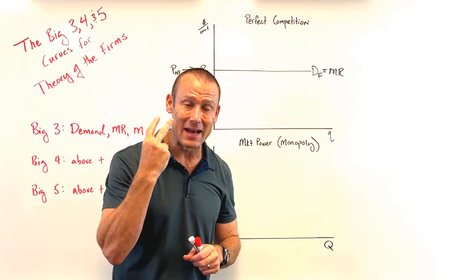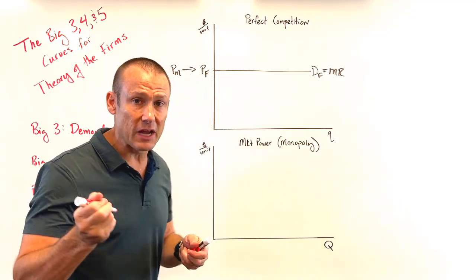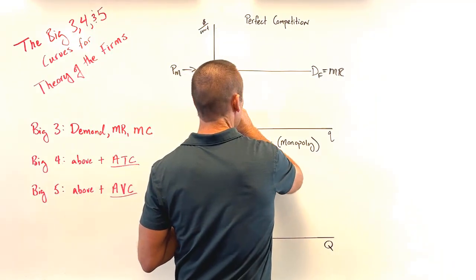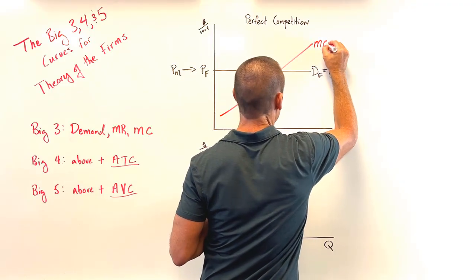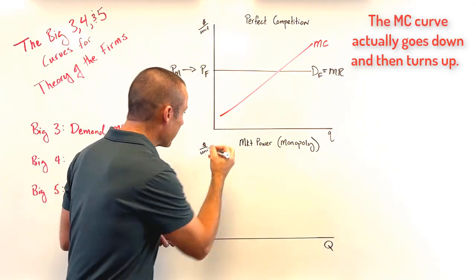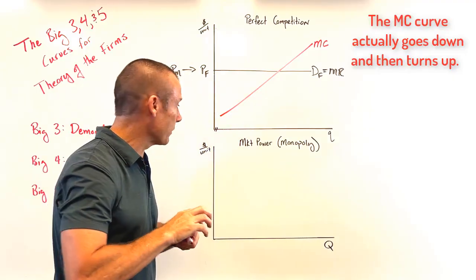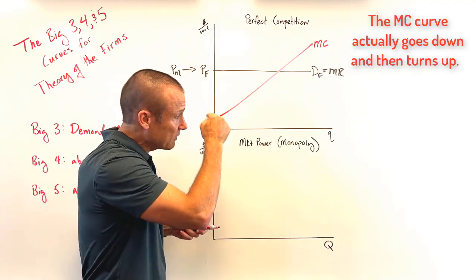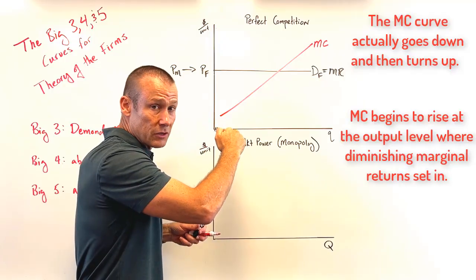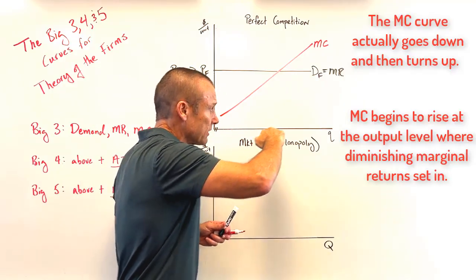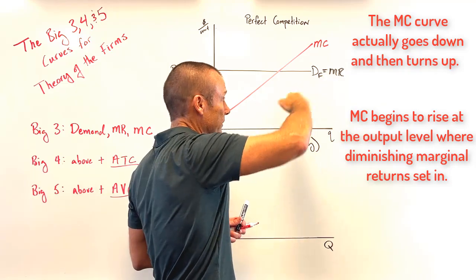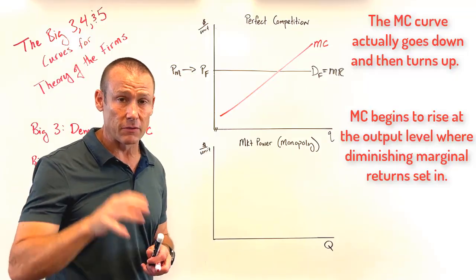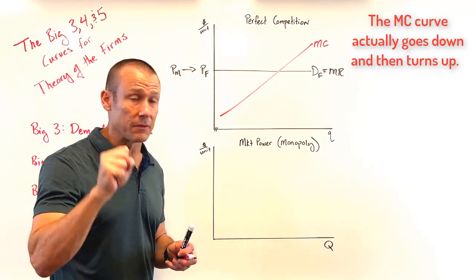Out of the big three curves, we've already got two — demand and MR. The final curve is MC. Generally, we draw MC upward sloping. There may be a small portion early on where MC is falling, representing increasing returns, but eventually it represents decreasing marginal returns. So what we generally show is that upward-sloping MC curve.